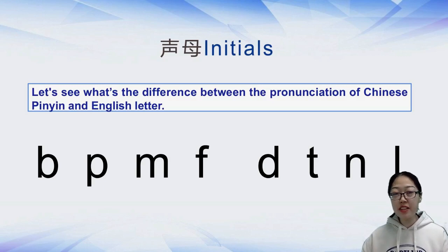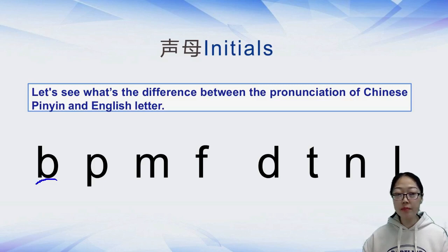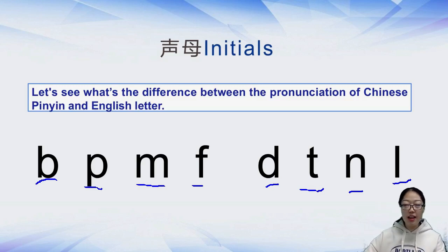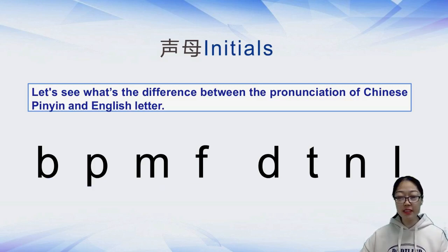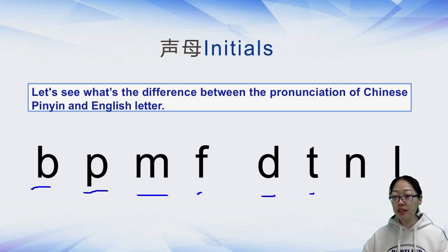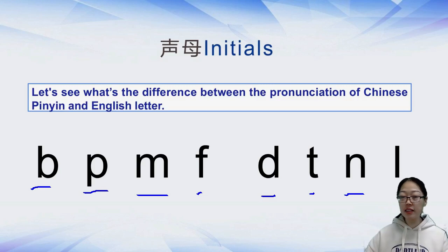Now let's learn some initials of Chinese pinyin and see the difference between the pronunciation of Chinese pinyin and English letters. For example: b (波), m (摩), f (佛), d (得). Let's read again: b, m, f, d.